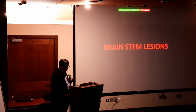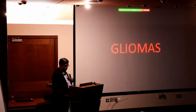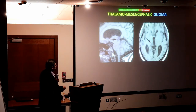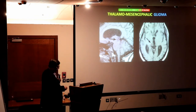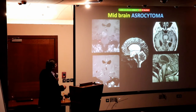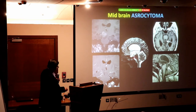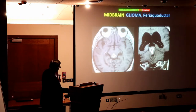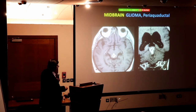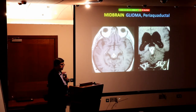Now let's see brain stem pathology. One common finding is glioma — called thalamo-mesencephalic when between the thalamus and midbrain. This is a midbrain glioma around the aqueduct — a periaqueductal glioma, better named a pencil glioma. The midbrain parts are: the tectal plate, the tegmentum, the brachium pontis, and then the open and closed parts of the medulla, down to the spinal cord.